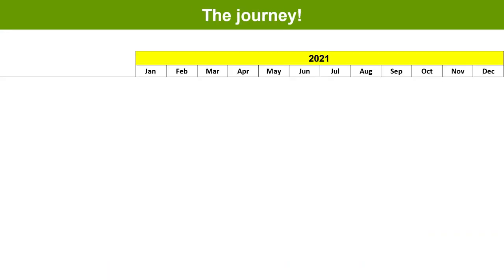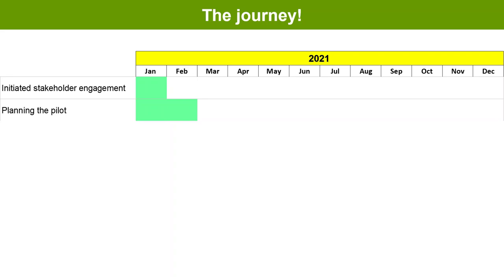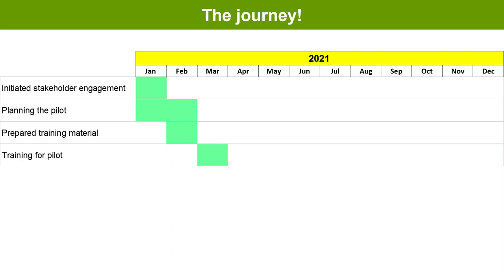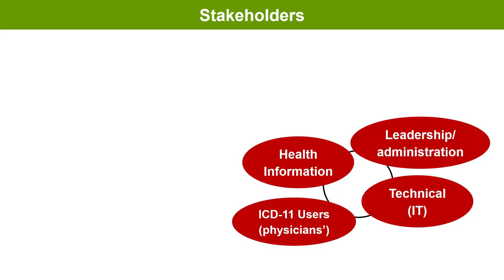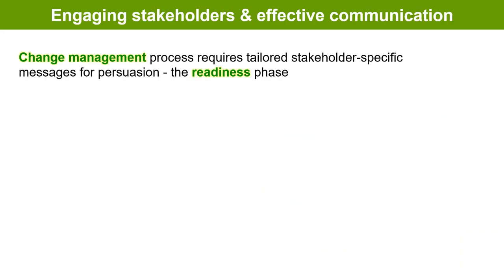It took us almost a year to reach full hospital implementation. We started with stakeholder engagement, then planned our pilot on a manageable scale, trained the doctors in the department where the pilot would take place, and conducted the pilot over four months. Based on the data collected and lessons learned, we planned our full implementation, followed by large-scale training and finally full hospital implementation. Implementing ICD-11 has four main stakeholders: health information managers, hospital administration, IT staff, and physicians. ICD-11 is an organizational change requiring effective communication, so we tailored stakeholder-specific messages to persuade each one to buy into and commit to this change.